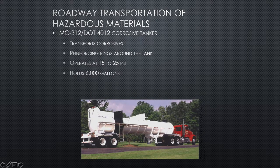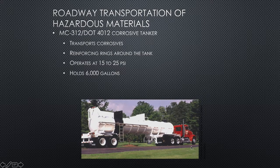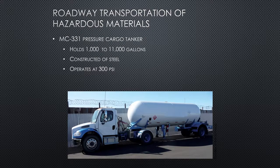A corrosive tanker can usually be identified by the stabilizing rings that reinforce the tank around it. These pictures can actually be found in sources like the Emergency Response Guidebook. It holds about 6,000 gallons and operates at approximately 15 to 25 PSI — and it's going to have something corrosive inside.